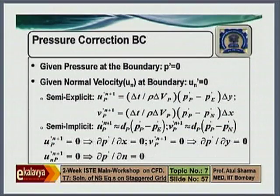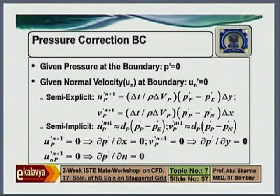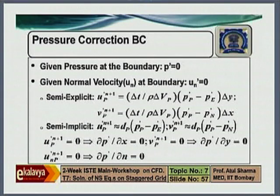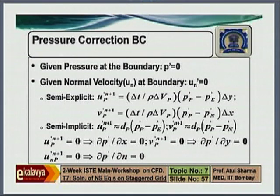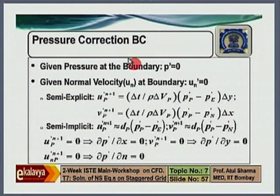In this slide, I am showing you that as we have a pressure Poisson equation for pressure correction, it is like a conduction equation, so you need boundary conditions at all the boundaries. Here I am showing you the boundary conditions for pressure correction. When the boundary is where pressure is defined, like an outflow where pressure is prescribed, then the pressure correction becomes zero. So for any boundary where pressure is given, pressure correction is zero.